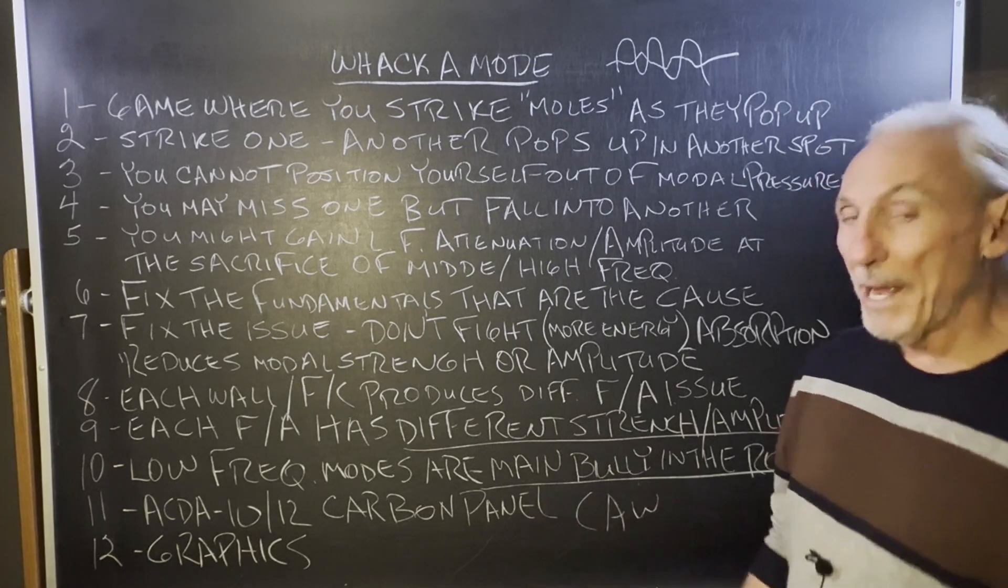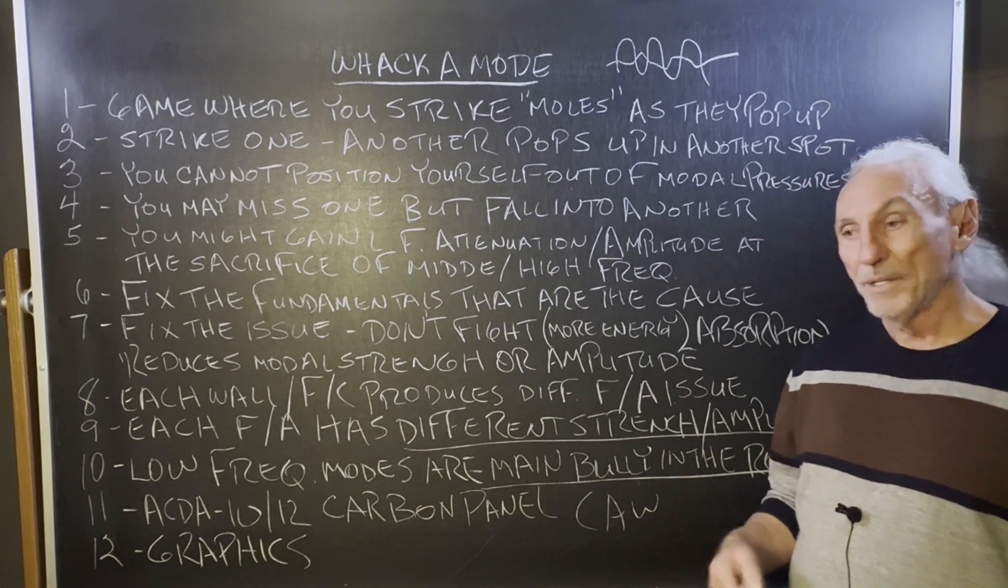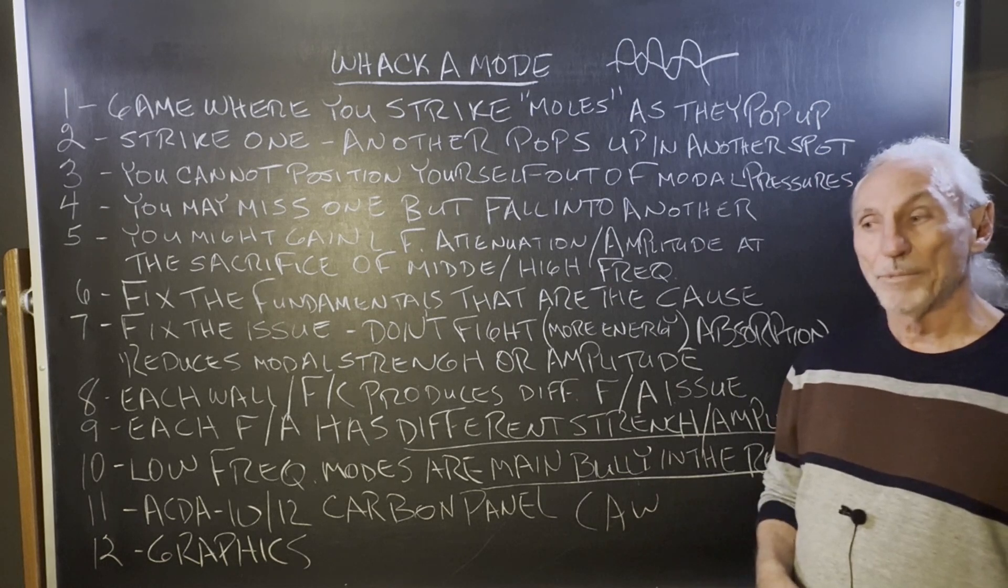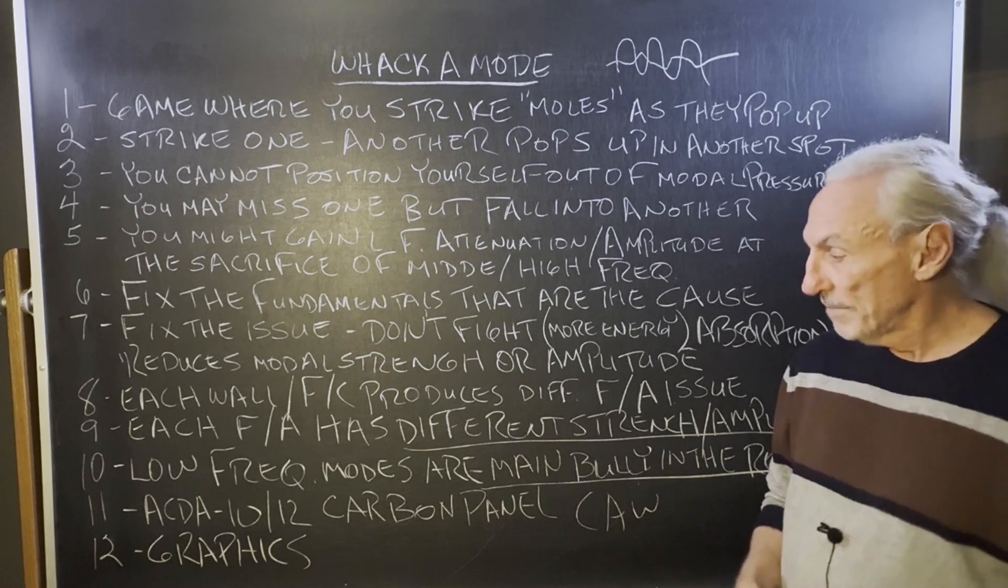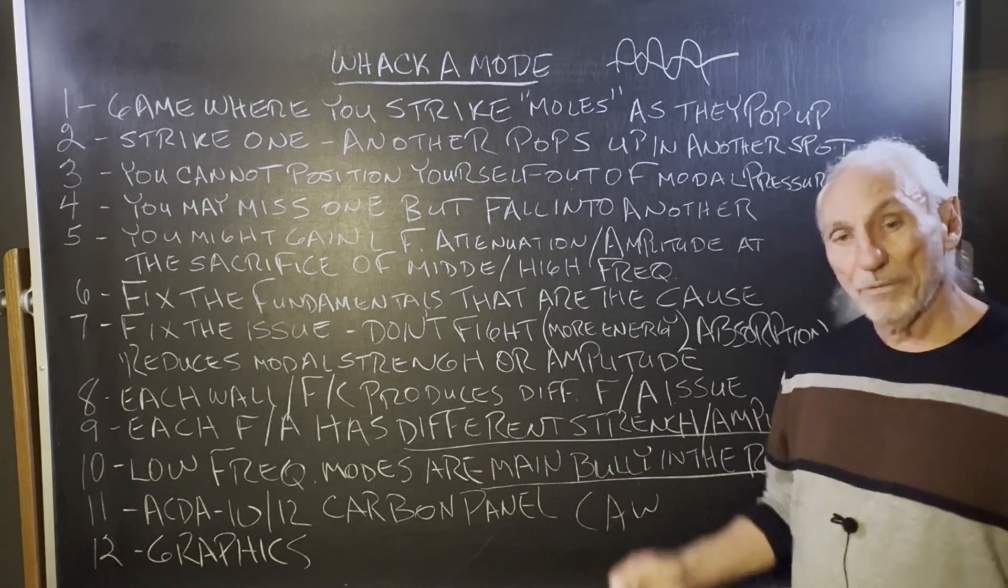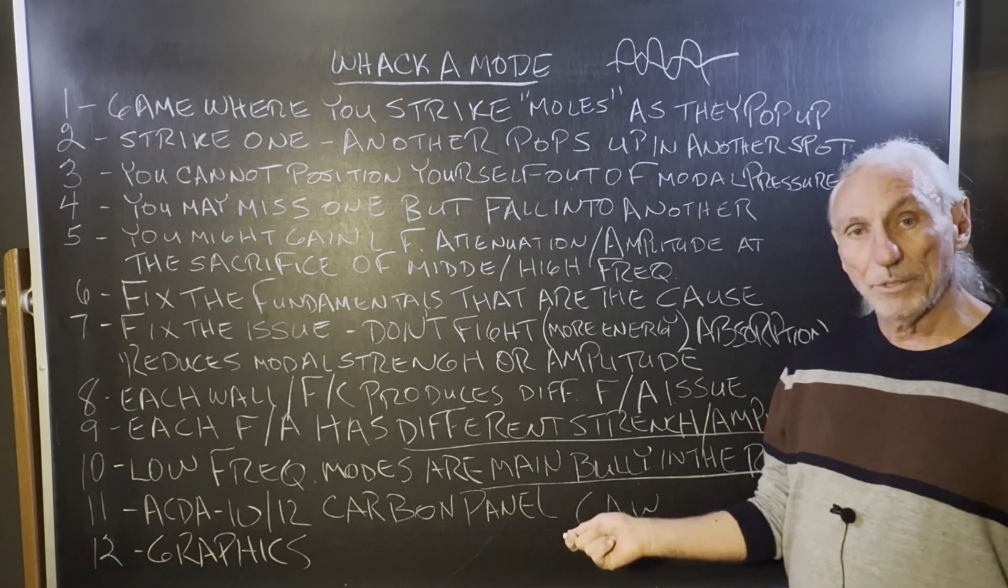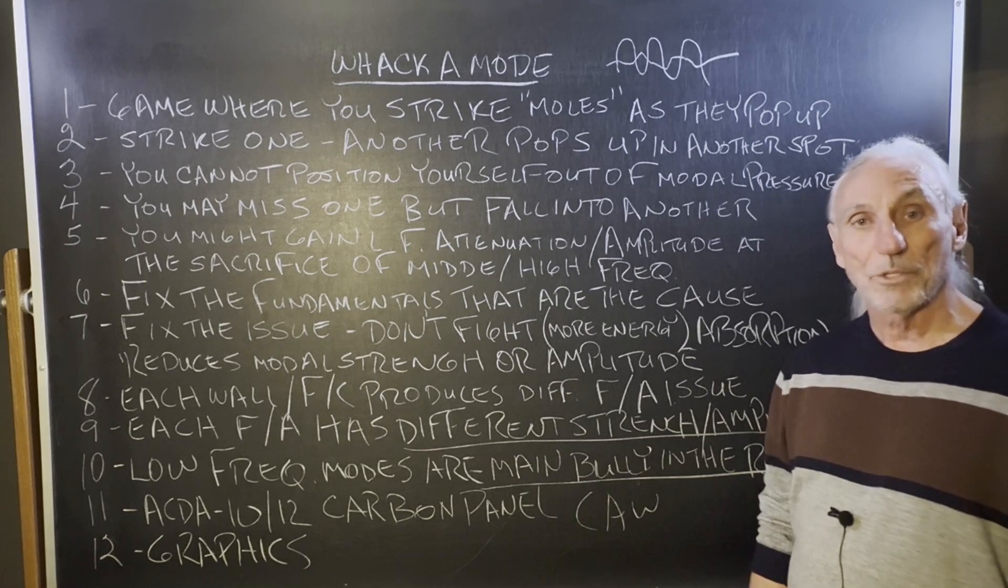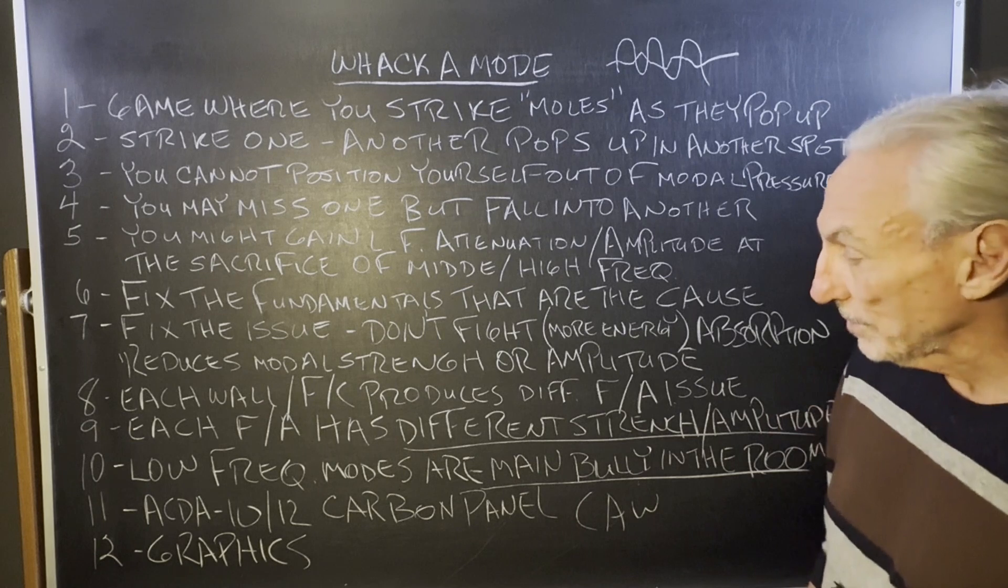And then we have our carbon panel for those people that just have 40 cycle and above issues. Not all rooms have 30 cycle problems. I would say half are 30 and half are 40 starting point. The ACDA 10 and 12 are 16 inches deep, the carbon panel is 12. So if you don't have a 30 hertz problem, you don't need to lose four inches of space to treat it. And most rooms are small, so you have to be conscious of all that.